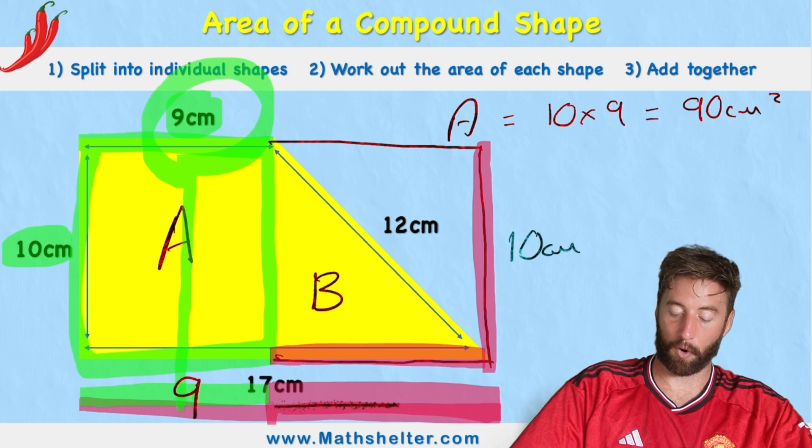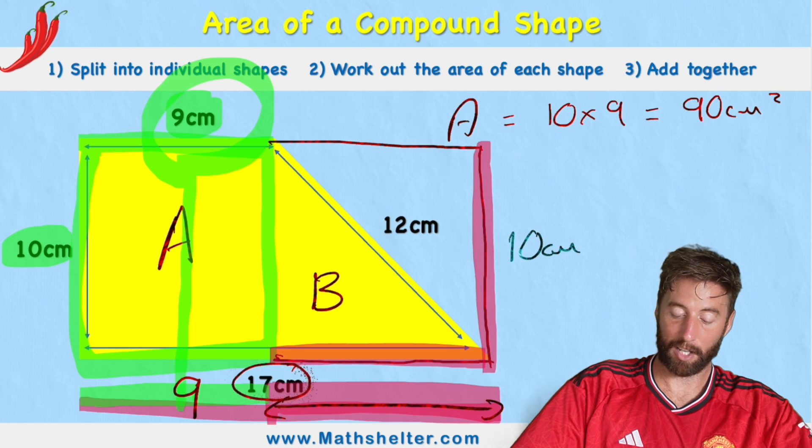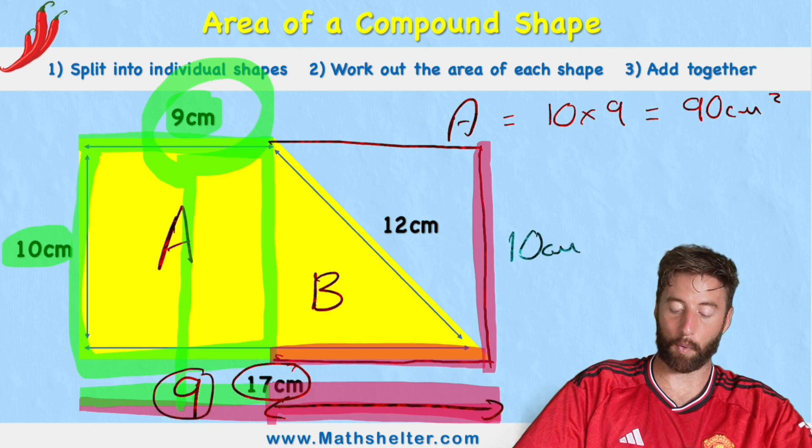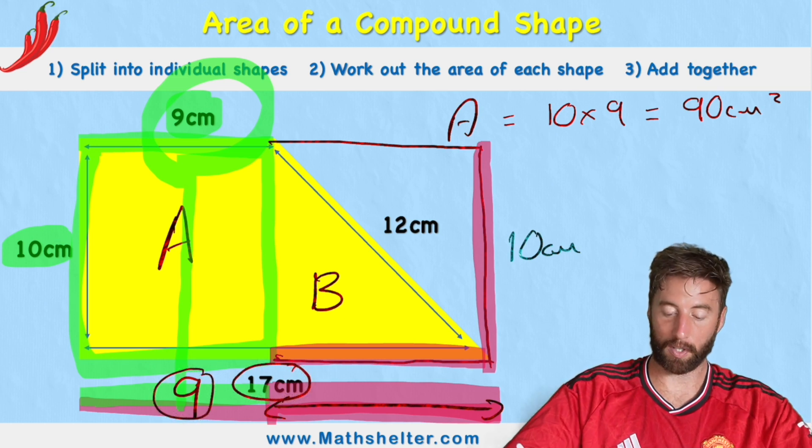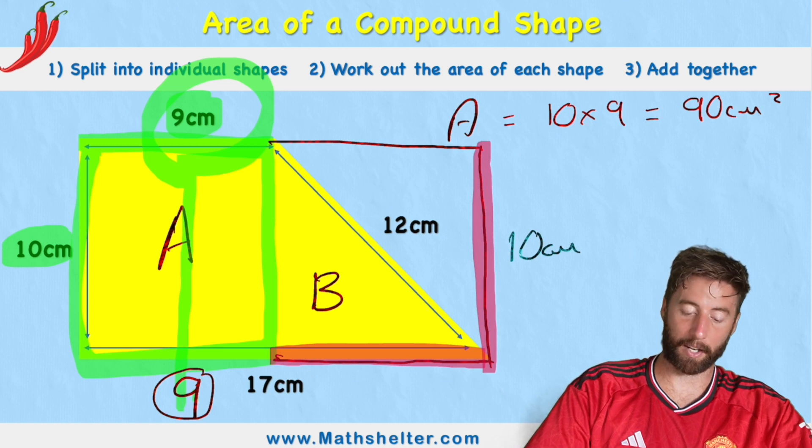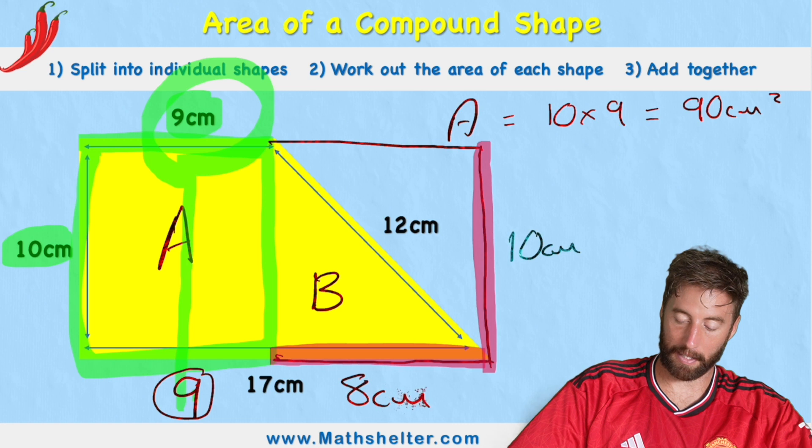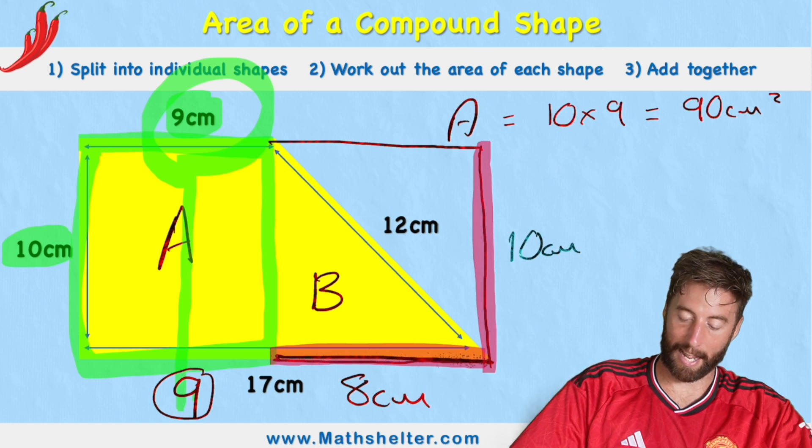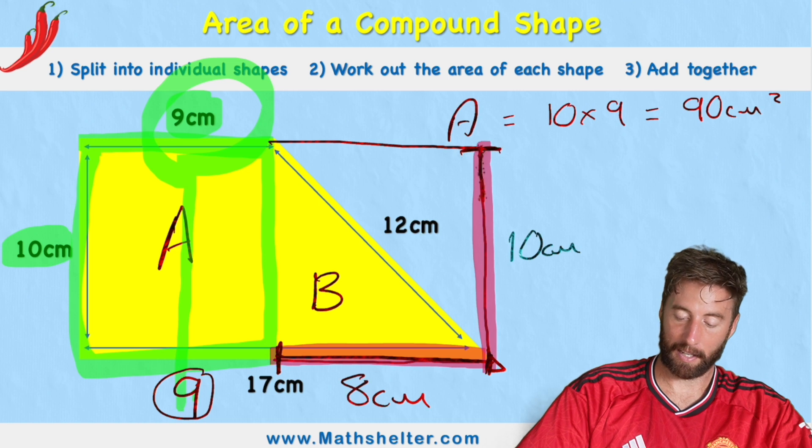So therefore, the remaining part must be 17 subtract my 9. That will give me this missing measurement, and 17 subtract 9 leaves me with 8 centimeters. So this length, my base, is 8, and my height is 10.